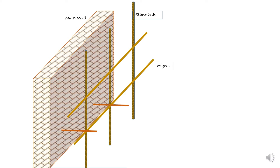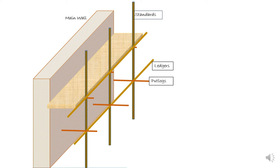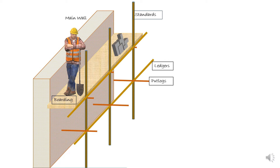Next is put logs. Put logs are traverse members supported over the ledgers, with one end fixed on the wall and the other end on the ledgers. These members support elements to create a platform to support workmen. An opening is created to set up put logs. For the working platform, we have boarding — these are horizontal platforms to support the workmen and material, and they are supported on the put logs.